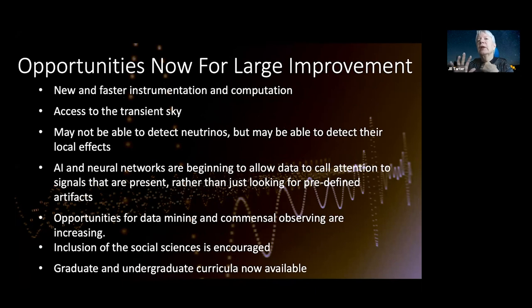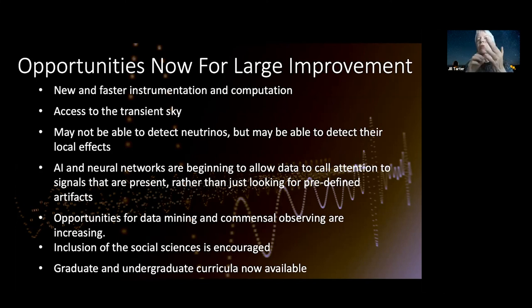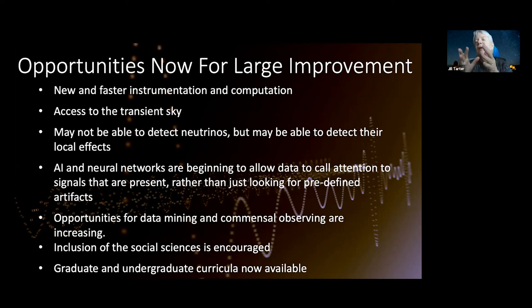There's a huge opportunity for improvement right now, which is why it's wonderful that we're having this workshop. We've got lots of fast computing; we're beginning to have access to the transient sky; we could perhaps detect neutrinos as well as photons indirectly. We're beginning to use artificial intelligence and neural networks to look at the data in a way that's agnostic — not telling it to look for particular patterns in frequency and time, but asking the AI to tell us whether there's anything anomalous within a particular data set.